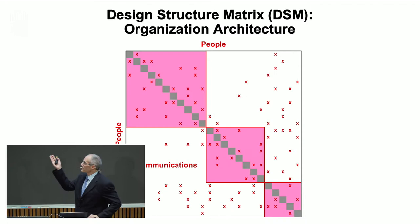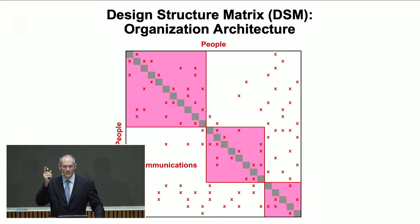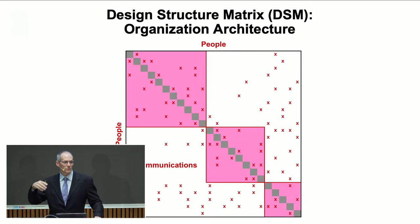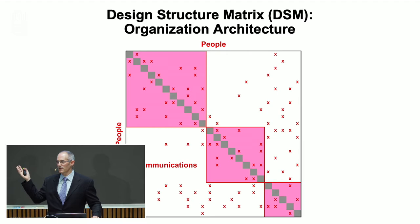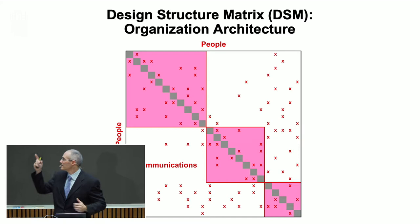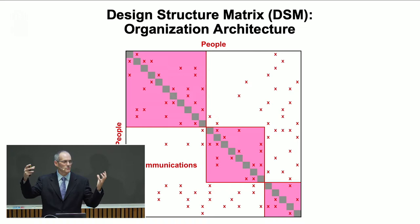This is a binary matrix — all marks are either X or blank. We don't always keep them binary; sometimes we put in shades of value or different types of graphics, symbols, or marks. We might do a clustering analysis to identify that this group of people works really closely together and so does this group — with some connections across them. The three pink squares might represent people at different locations or sites, or one might be a supplier, allowing us to look at connections with those organizations.